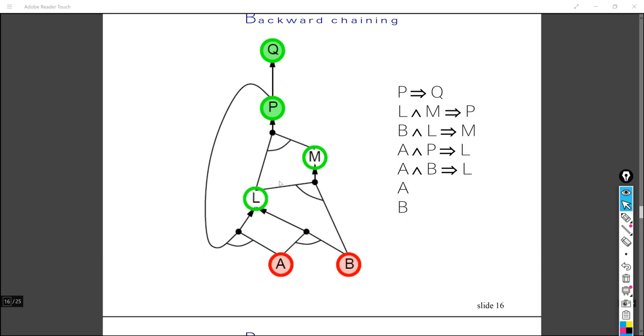So in order to prove L is true, we actually got two ways here. One is to prove this way. So this way is both A and B are true, and the second way is P and A are true. However, P here, we currently don't know yet, so we can just go this way. And this way we know, since by giving the knowledge base, both A and B are true, so we know L is true.